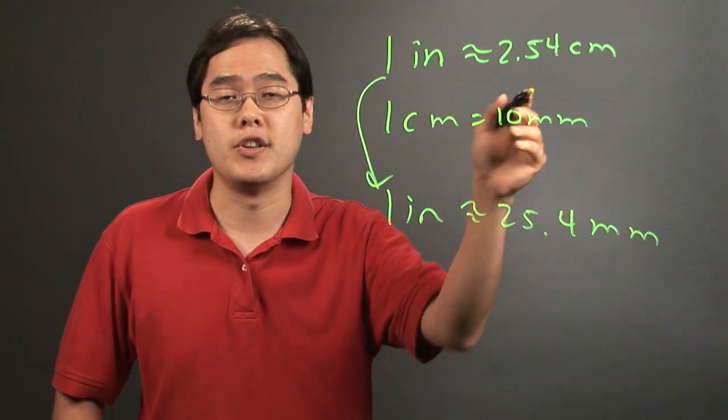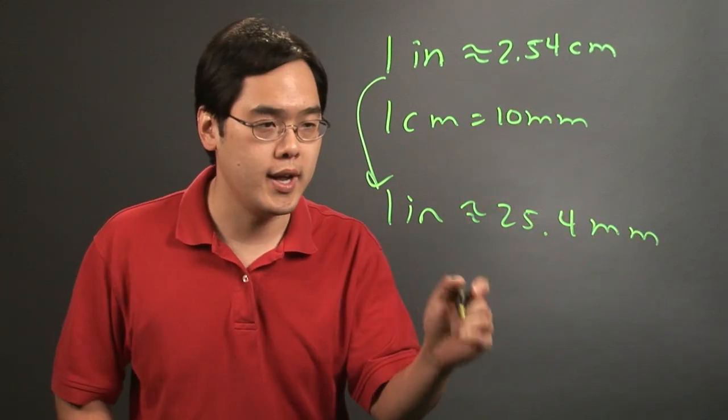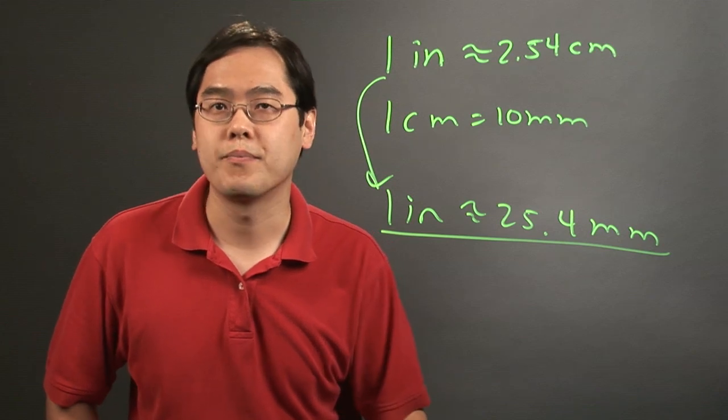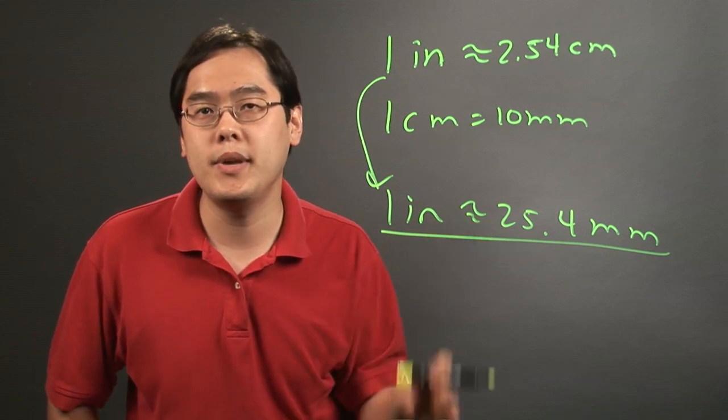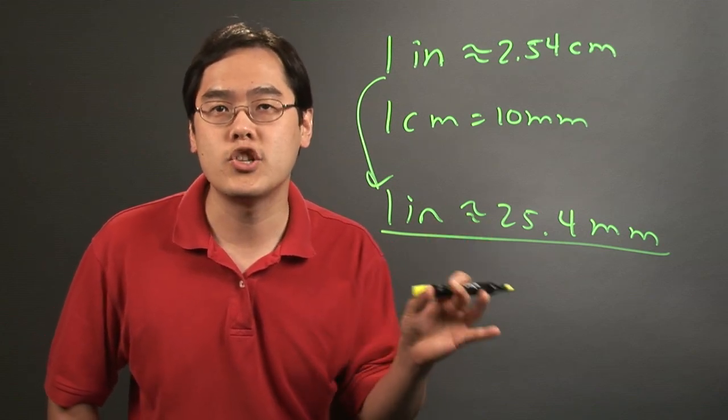You can multiply by 10. You could shift the decimal over one place, but either way, this will be what you're looking for. So I'm Jimmy Chang and that's how many millimeters equals one inch in diameter.